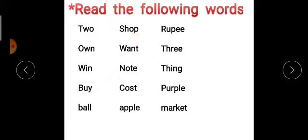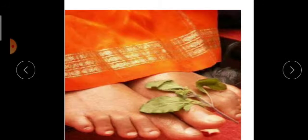C-O-S-T cost, A-P-P-L-E apple, R-U-P-E-E rupee, T-H-R-E-E three, T-H-I-N-G thing, P-U-R-P-L-E purple, M-A-R-K-E-T market. Like this we have to read the words. Shall we meet in the next class. Sairam.